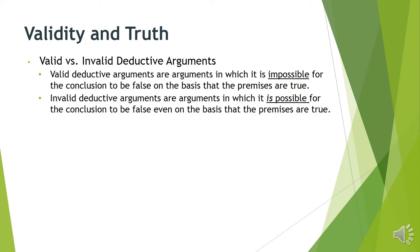Valid deductive arguments are ones that are successful in being deductive in the following way. Deductive arguments are shooting for certainty. Valid deductive arguments succeed in certainty — they are arguments for which it is impossible for the conclusion to be false on the basis that the premises are true. An invalid deductive argument is one for which it is possible for the conclusion to be false on the basis that the premises are true.